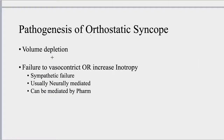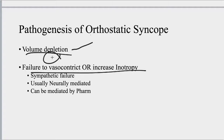Orthostatic syncope is a failure of the sympathetic nervous system — failure to vasoconstrict or failure to increase inotropy when needed. Volume depletion is the number one risk factor. Orthostatic syncope is not necessarily a complete failure of the sympathetic nervous system to act, but a failure to act enough. You can become so dehydrated that even a perfectly healthy sympathetic nervous system cannot act sufficiently. Severe volume depletion alone can cause orthostatic syncope.